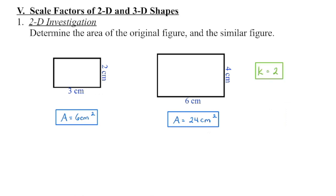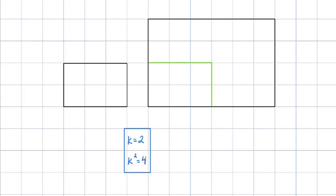3 times 2 is 6, and 2 times 2 is 4. But in terms of the area, if I were to go 6 times 2 I would get 12, not 24. The linear scale factor is 2; what we call the area scale factor is 4. We can see this better when I put it on grid paper. My original rectangle had a base of 3 units; we've now doubled that with a scale factor of 2 to get a base of 6 units.